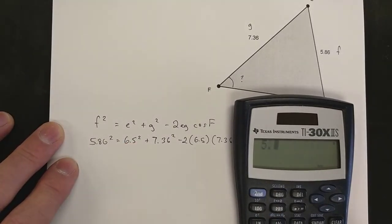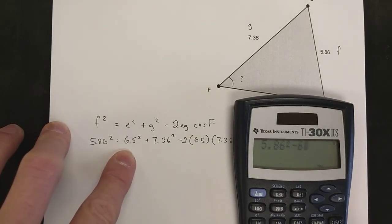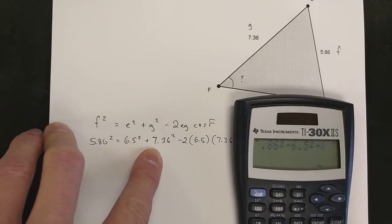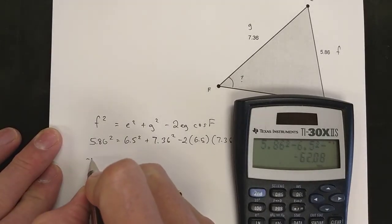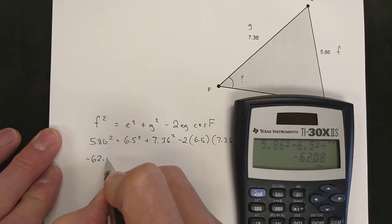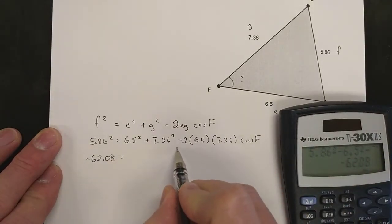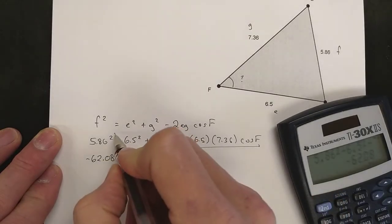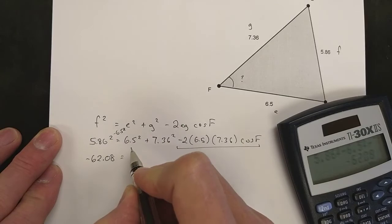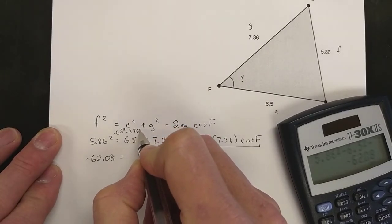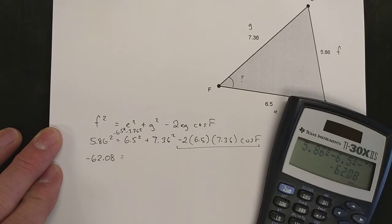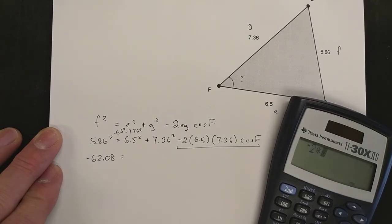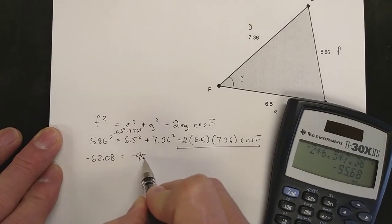I'll find out what 5.86 squared minus the 6.5 squared minus the 7.36 squared is. That effectively puts everything up to there onto one side of the equation, and I get that side works out to negative 62.08. I'm left with negative 2 times 6.5 times 7.36, which works out to negative 95.68, and that is the coefficient to cos F.